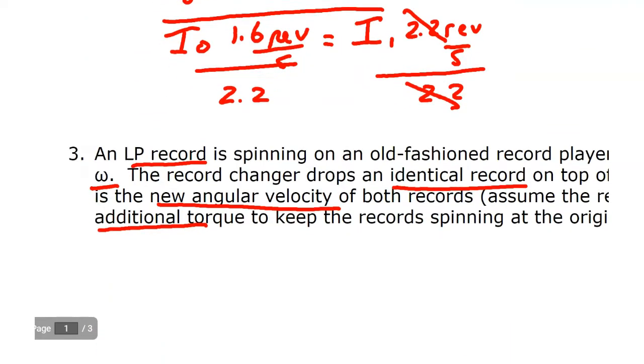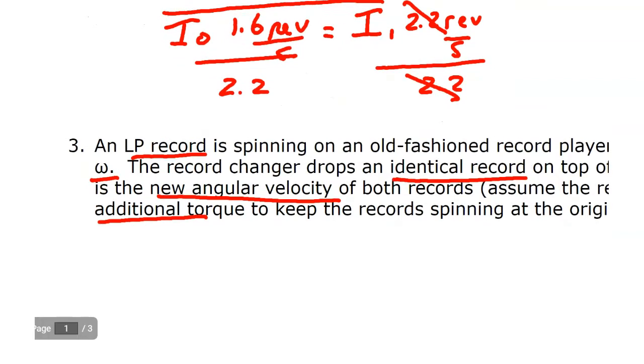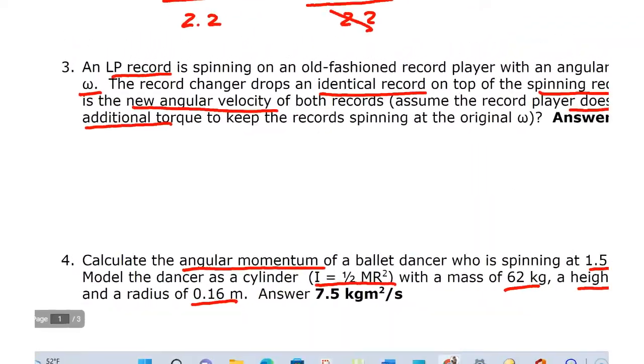So the final is 0.73 times the initial because 1.6 divided by 2.2 is 0.73. Okay, so what's the basis of this is that while she changed her, she pulled her arms in, she reduced her moment of inertia and increased her angular velocity, but what didn't change is her angular momentum because there was no torque on this system, no net torque on the system, so the angular momentum before she pulled in her hands equals the angular momentum after.